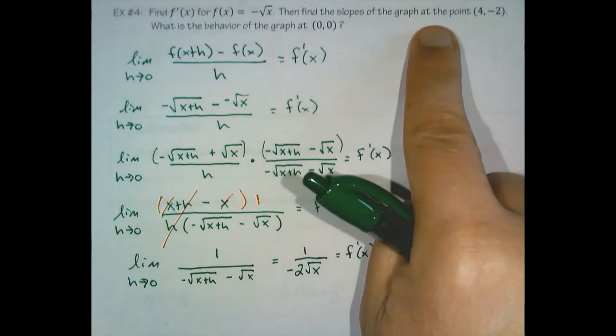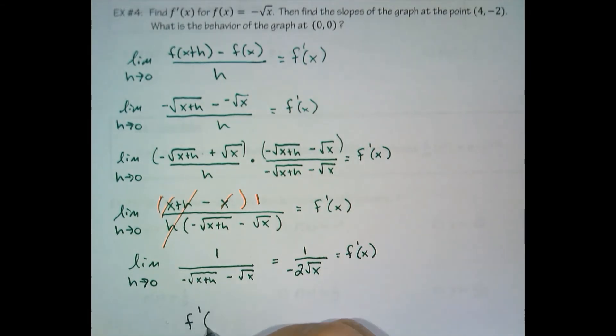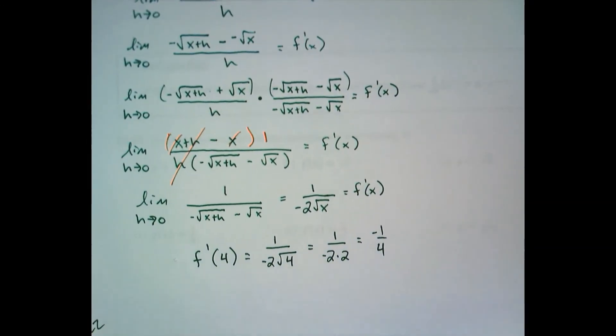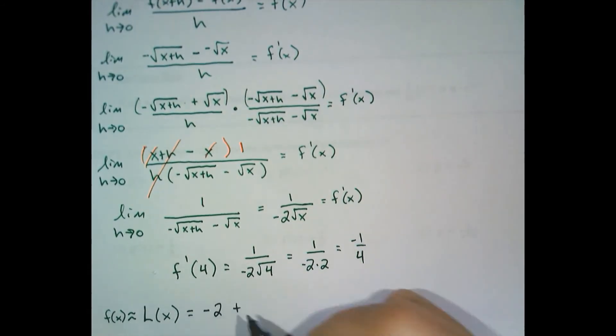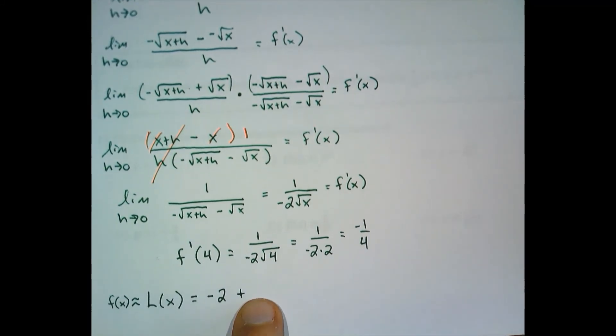And they say, find the slopes at the point 4 negative 2. So they're asking the question, what is f prime of 4? Well, f prime of 4 would be 1 over negative 2 root 4, which is 1 over negative 2 times 2, which is negative 1 fourth. So if we wanted to set up our tangent line equation, we can approximate the function. F of the center, that's the y-coordinate at 4. They gave us the y-coordinate at 4, that was very nice of them. Plus f prime of the center, the slope at the center is negative 1 fourth, times x minus the center. We are centering it at 4.